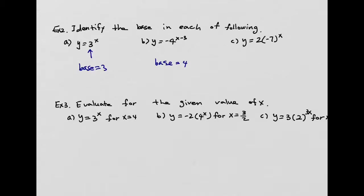For the next one, your base is going to be negative 7. Why? Because you have parentheses, so the exponent is applying to negative 7, not just the number.